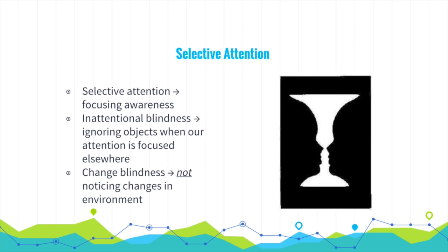The idea of inattentional blindness is also important — that's when we ignore objects when our attention is focused elsewhere. An example is when people were asked to watch a basketball game and count the number of times players in black jerseys pass the ball. Because they were so focused on counting, they failed to notice a woman with an umbrella who sauntered across the court in the middle of the game. That's inattentional blindness.